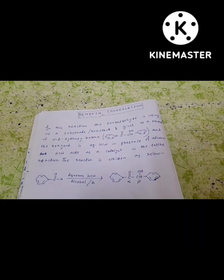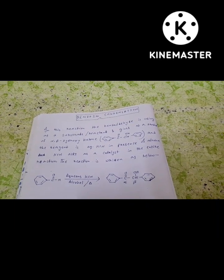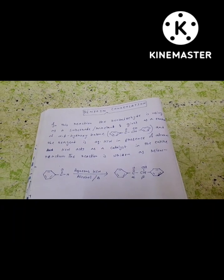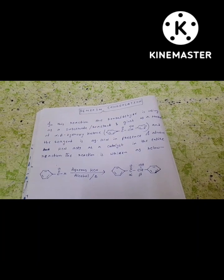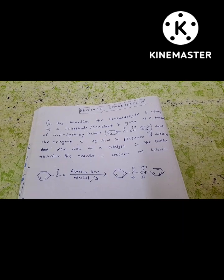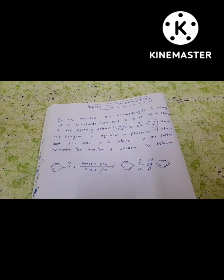Here the benzaldehyde is taken as two moles - two molecules of benzaldehyde are required in this reaction. If you are willing to see the mechanism of the reaction, how the product is formed from the benzaldehyde by using KCN in presence of alcohol, then you can ask me in the comment section. I will bring about the mechanism of this reaction in the next video.